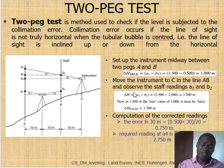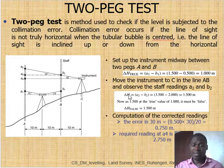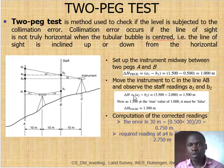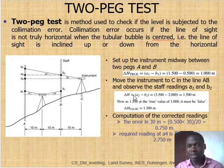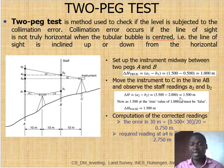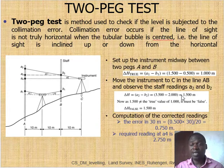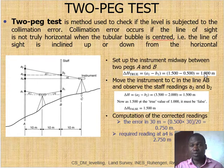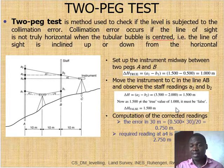The difference in elevation between A and B is computed by taking A2 minus B2, which corresponds to 3.5 meters minus 2 meters, equal to 1.5 meters. This result is different from the true value of 1 meter, meaning yes, there is a collimation error present.